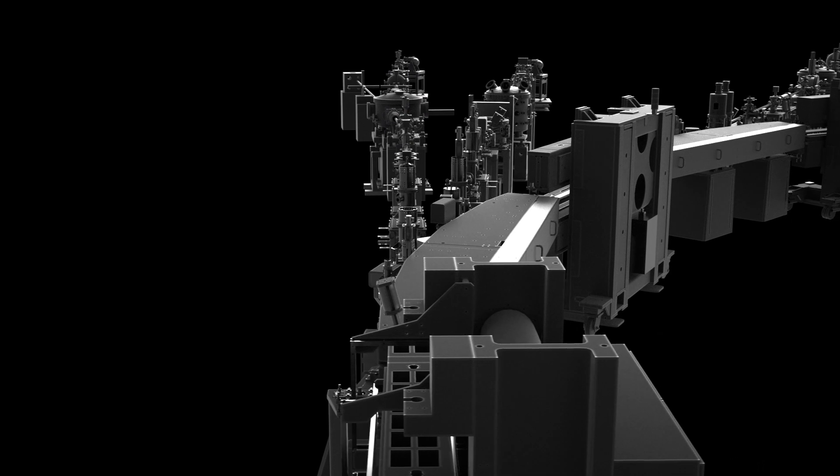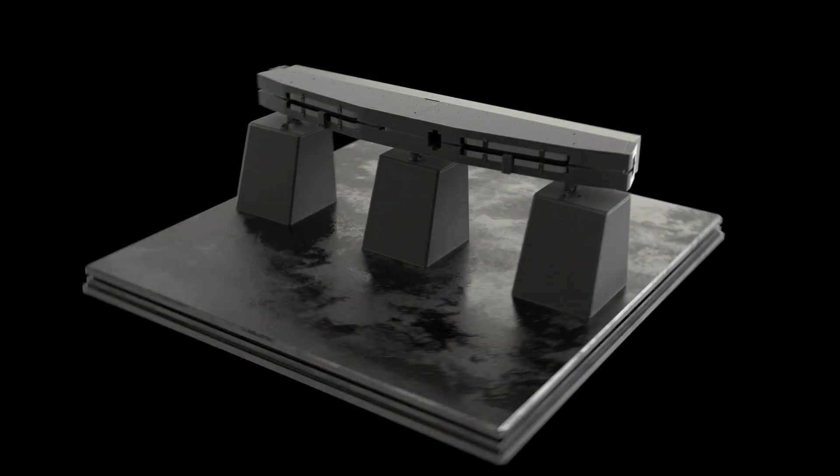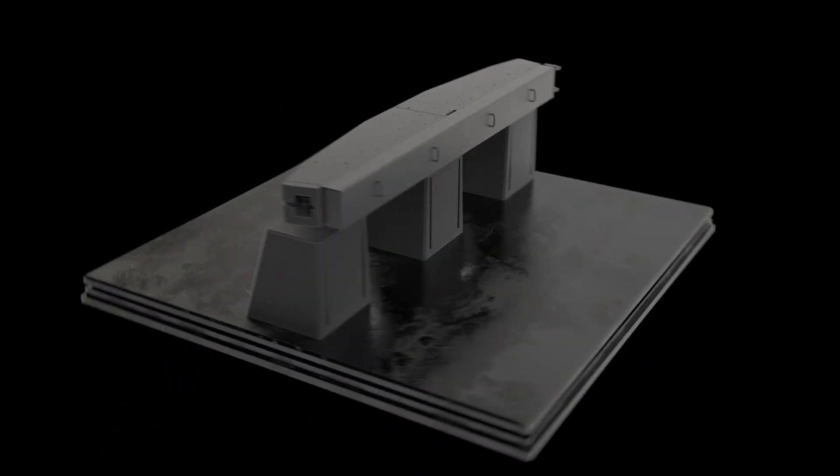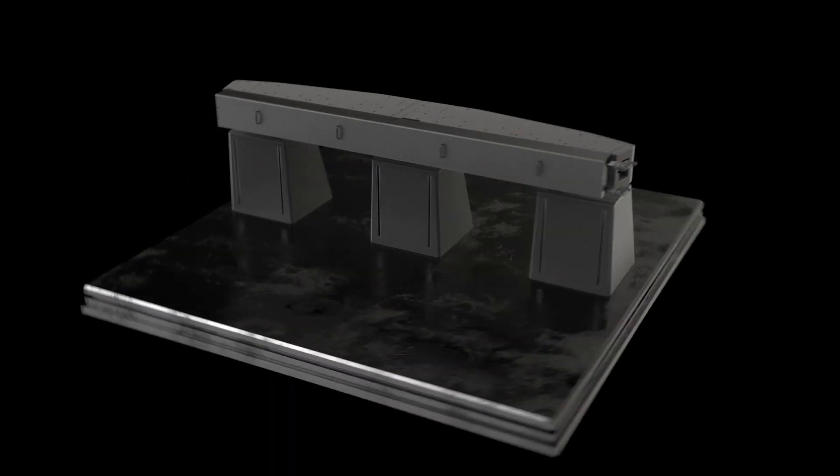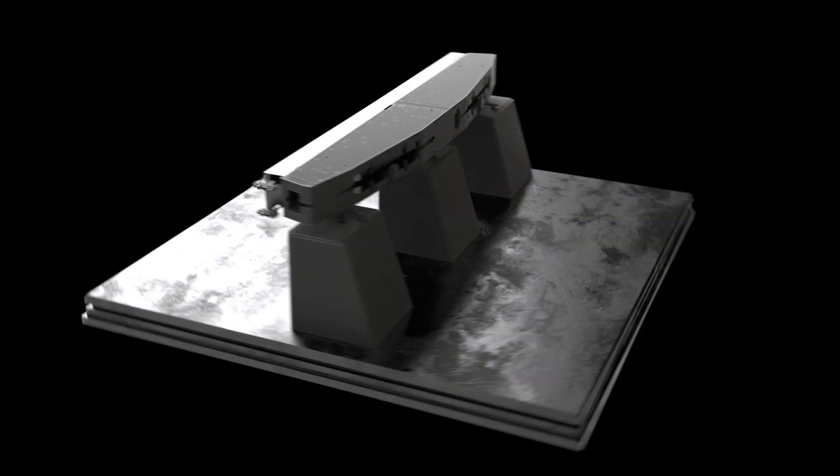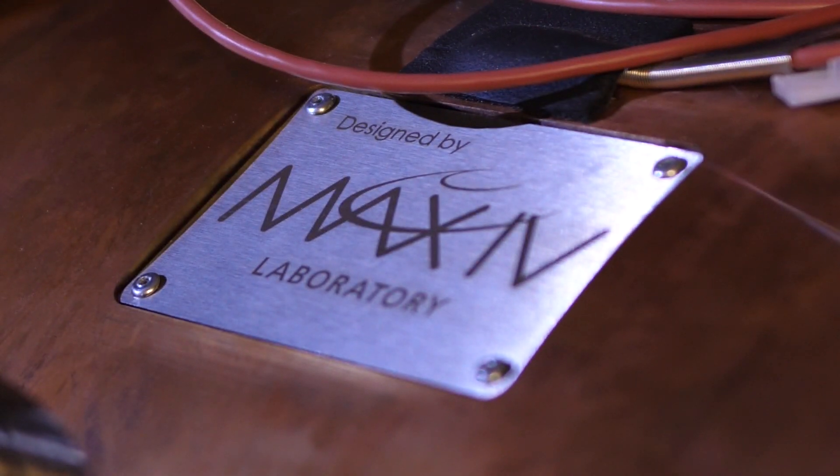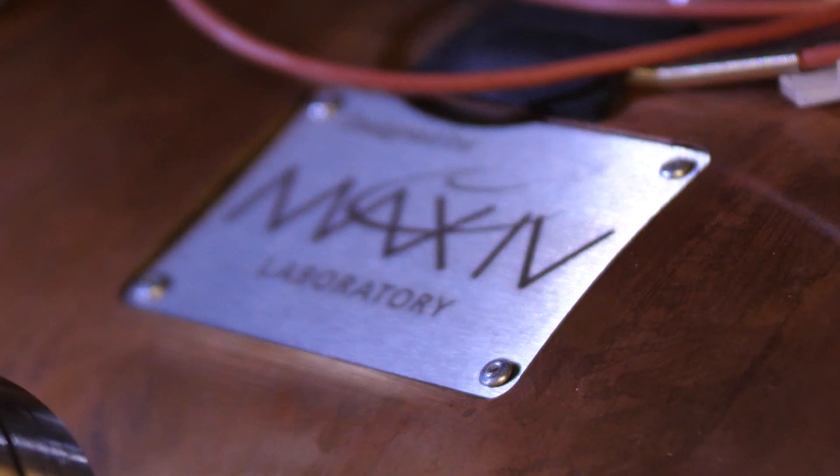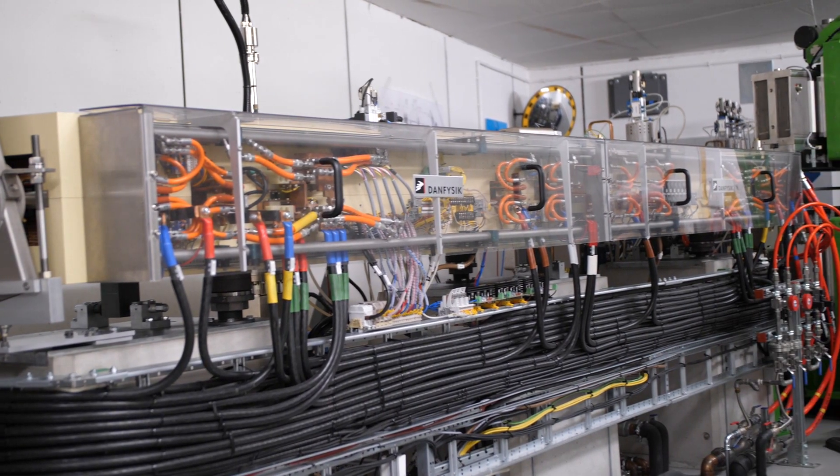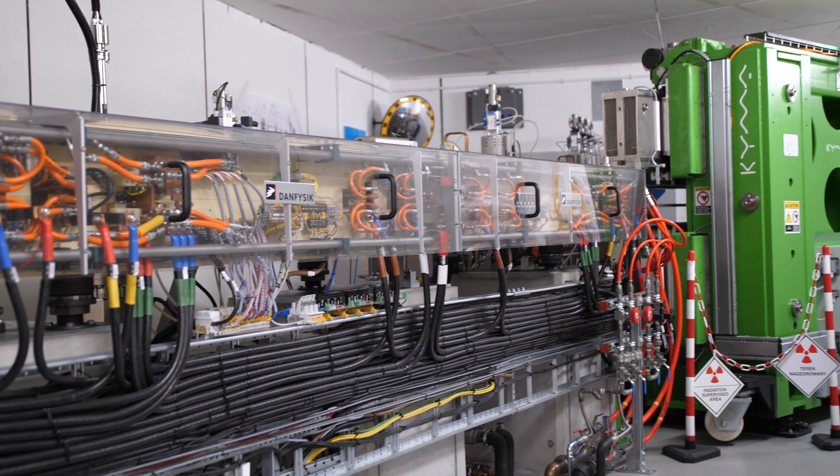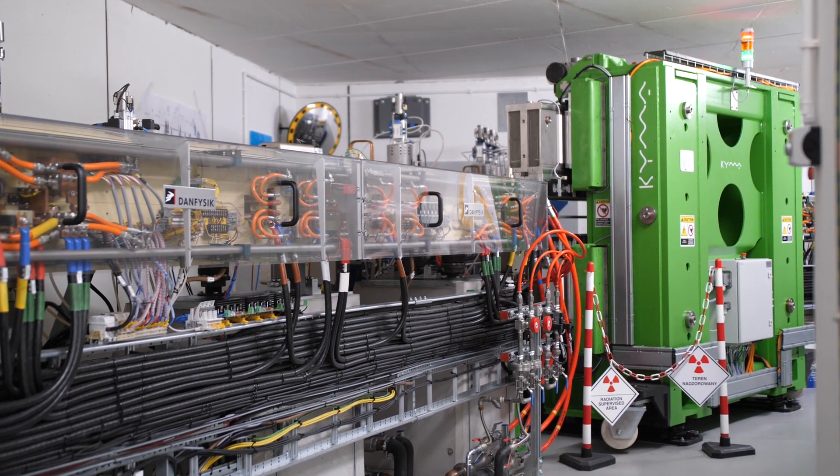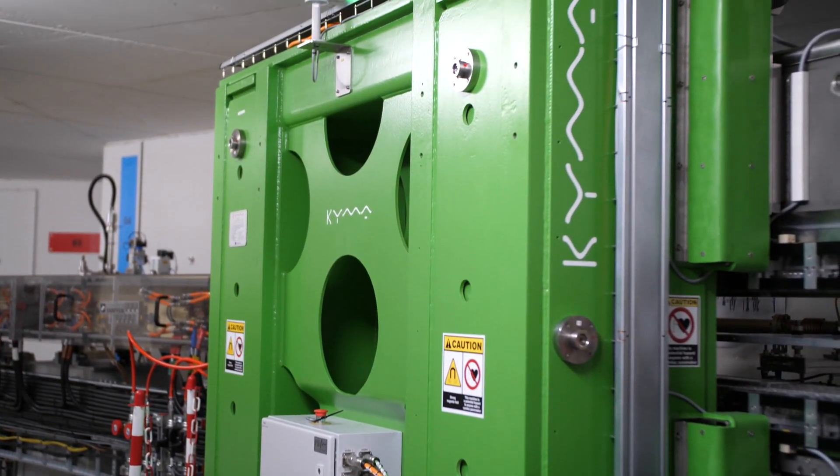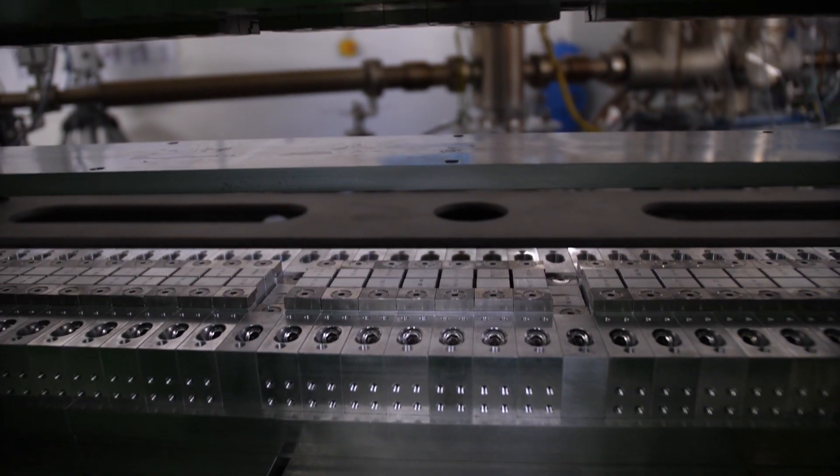To curve the paths of electrons, Solaris uses 12 integrated electromagnet blocks produced according to an innovative Swedish design from Max IV Laboratory. The insertion devices such as undulators and wigglers can be placed in the straight sections connecting these blocks. They create additional synchrotron radiation.